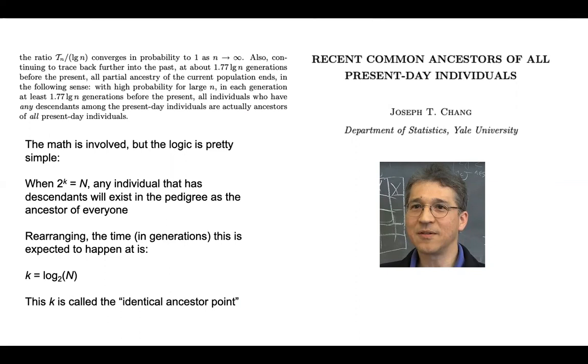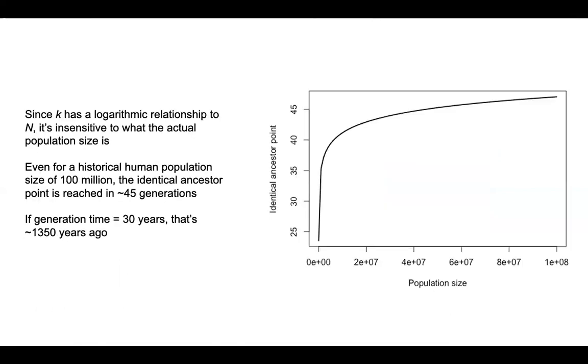The math he goes into to get this 1.77 is pretty involved, but we can show it logically pretty simply. As I've already shown, when 2 to the K equals N, any individual that has descendants will exist in the pedigree as the ancestor of everyone. We can estimate how long ago we expect that to be in generations by rearranging. We get K equals log base 2 of N. At that point, this K is the identical ancestor point. At that generation back in time, all the individuals alive, if they leave any descendants at all, are the ancestor of everyone alive.